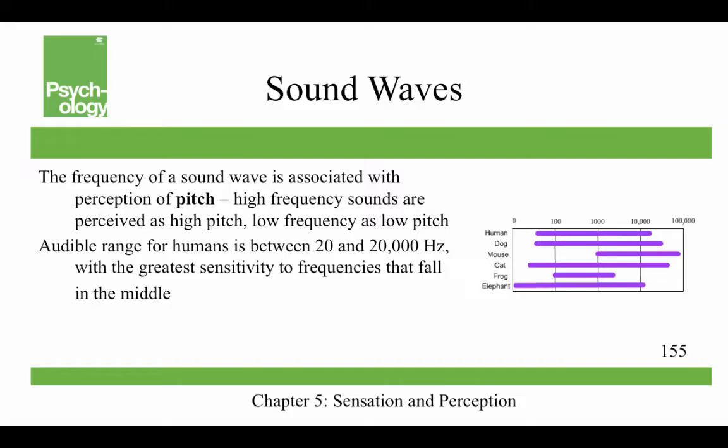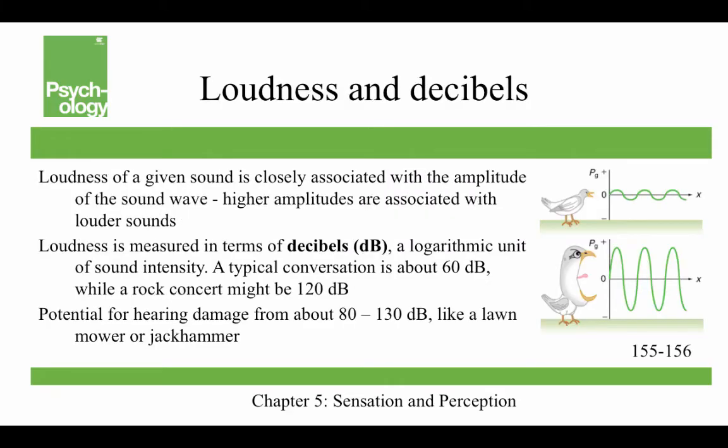The frequency of a sound wave is associated with the perception of pitch — high frequency sounds are perceived as high pitch, and low frequency sounds as low pitch. The audible range for humans is between 20 and 20,000 hertz, with the greatest sensitivity to frequencies in the middle. Dogs hear between 70,000 and 45,000 hertz, mice between 1,000 and 91,000 hertz. The beluga whale hears between 1,000 and 123,000 hertz — quite a range.